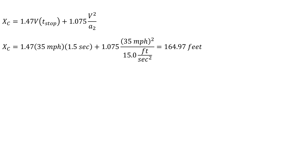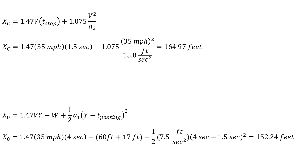Starting with x sub c, we plug in the given values and find a distance of 164.97 feet. We can also calculate x sub zero — plugging in the given values gives a distance of 152.24 feet. To recap: for x sub c, we used the speed of 35 miles per hour, t sub stop of 1.5 seconds, and a deceleration rate of 15 feet per second squared. For x sub zero, we used the same speed plus the yellow time of 4 seconds, intersection width of 60 feet, vehicle length of 17 feet, and an acceleration rate of 7.5 feet per second squared.